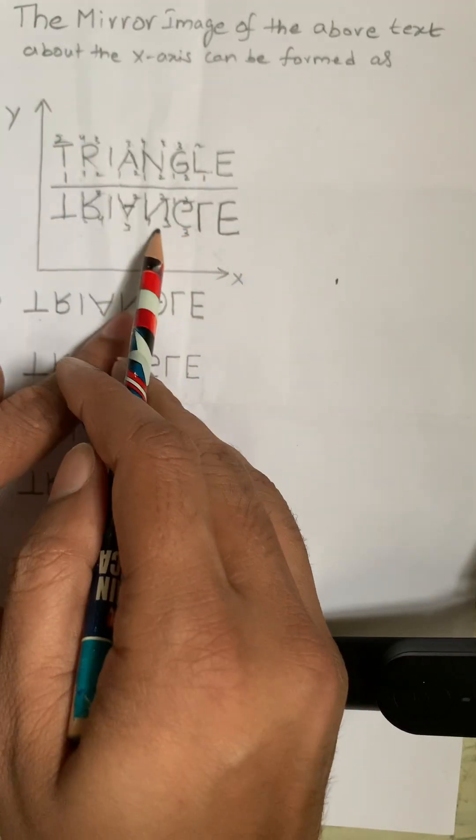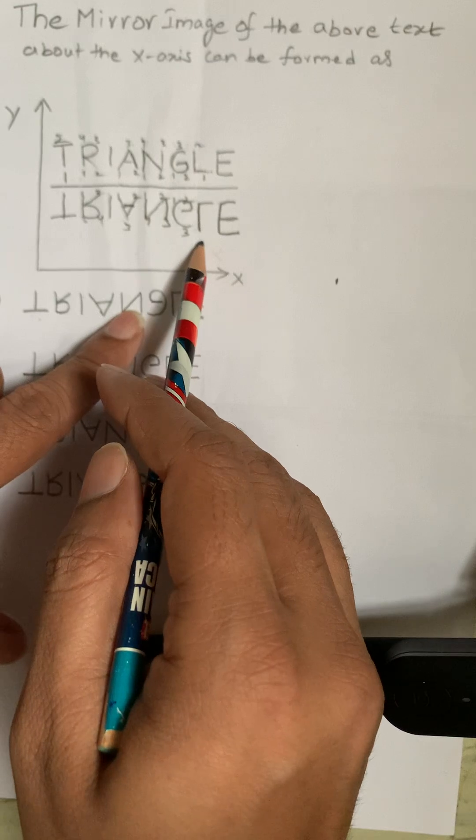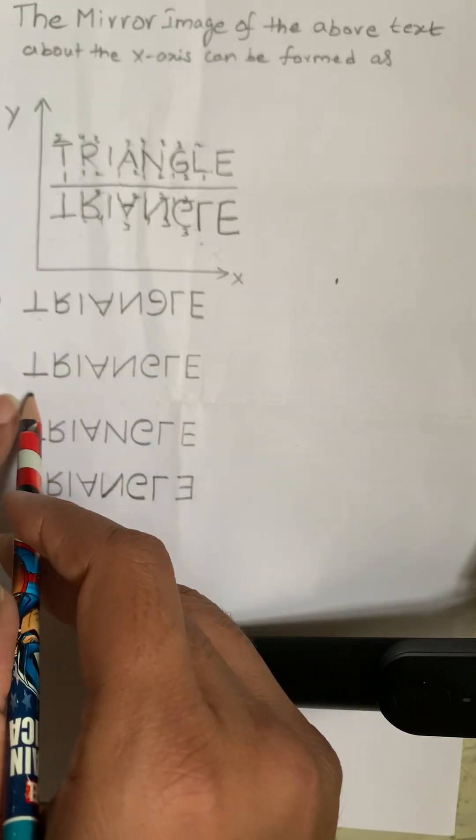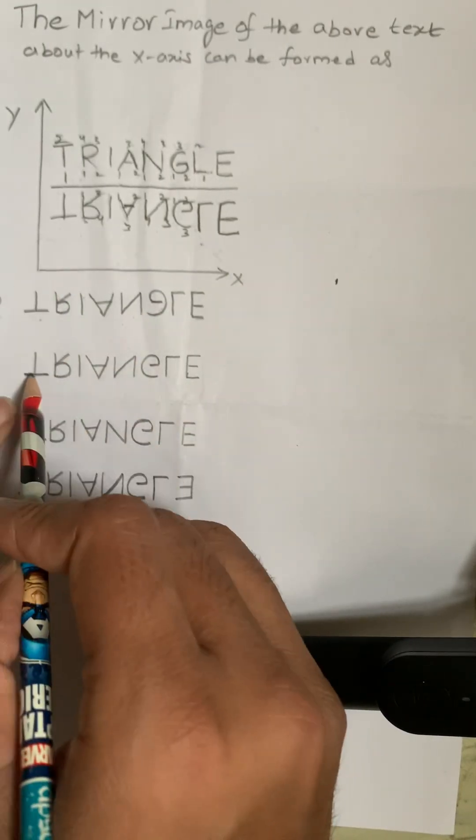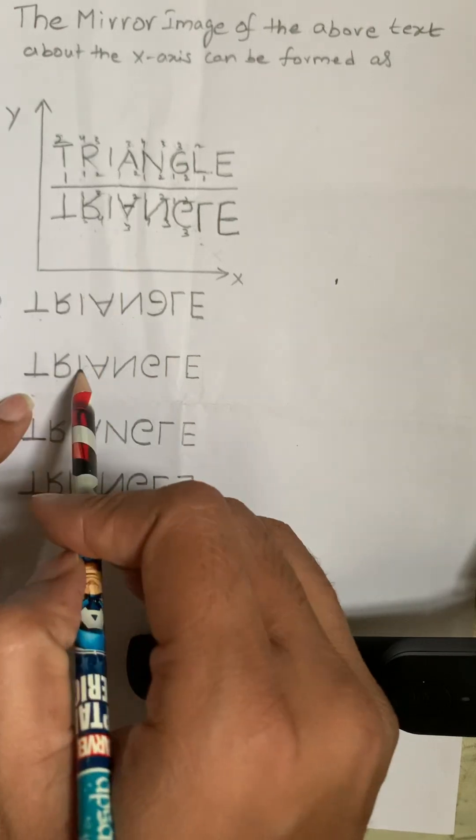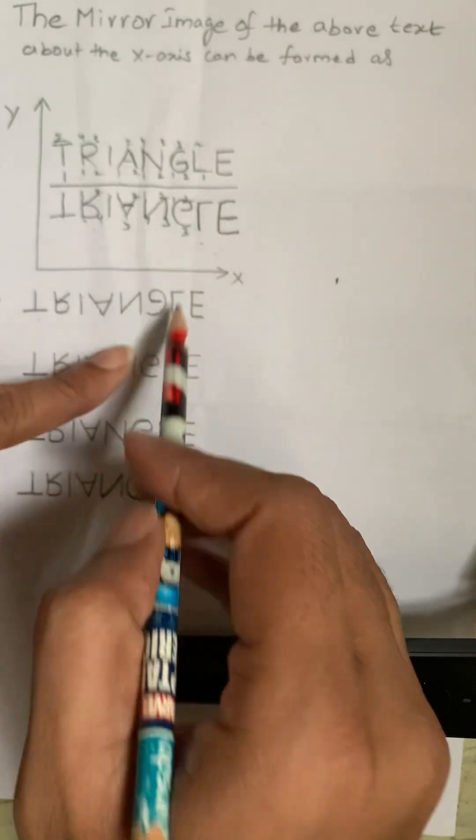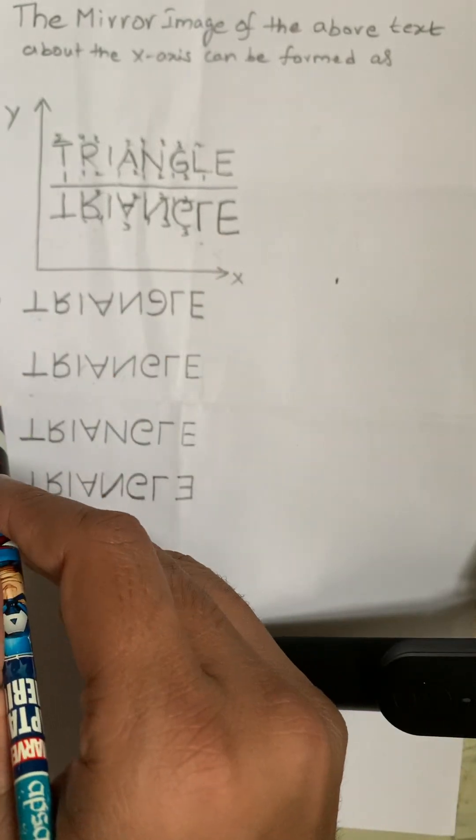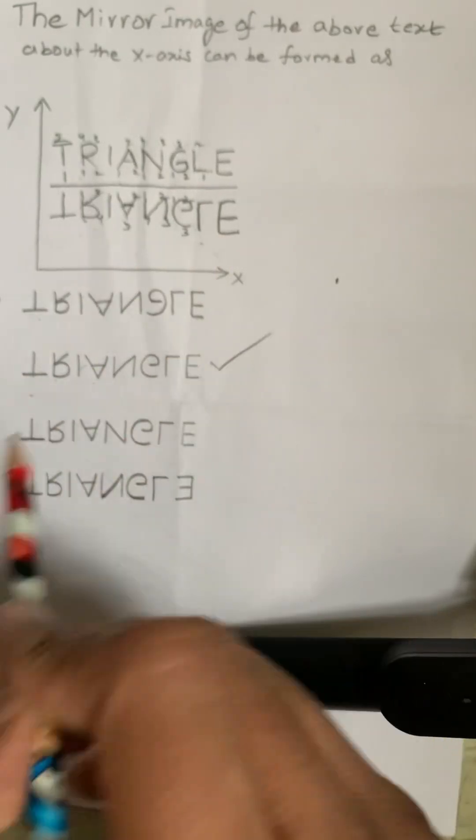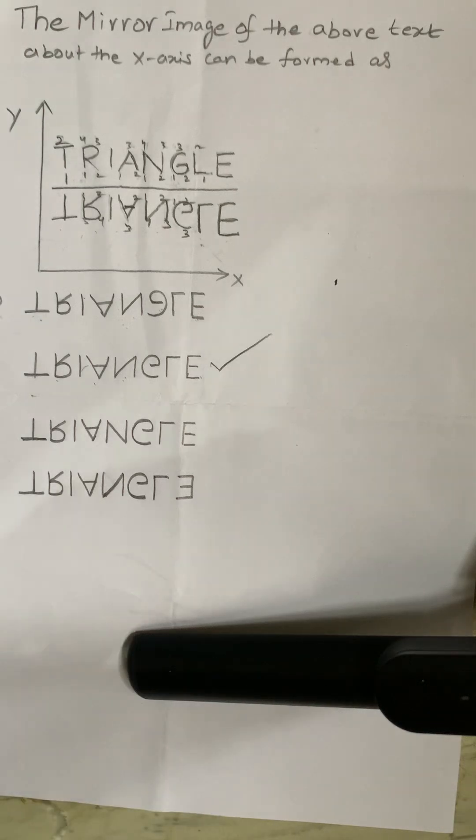So that is why I feel N and G little bit confusing, and L, E same. And the correct option is T, R, I, A, and N, and this is G, and this is L, and this is E. So option 2 is correct.